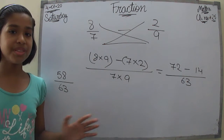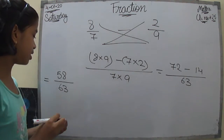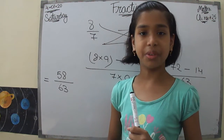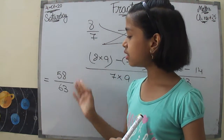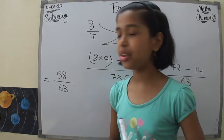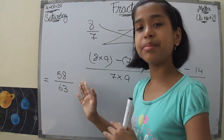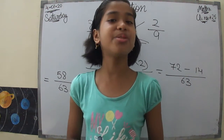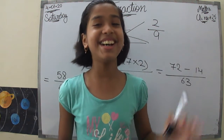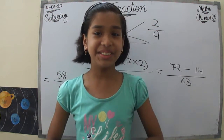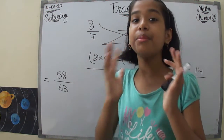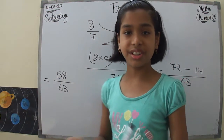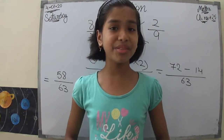Now there is one interesting thing here — can we simplify 58 upon 63 further? Let's check if both numbers are divisible by 2. Of course not. We can use the divisibility rules to check if a fraction can be cancelled or not. I've talked about divisibility rules in another video — you can click the i button to find that.